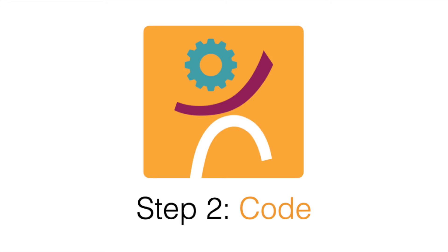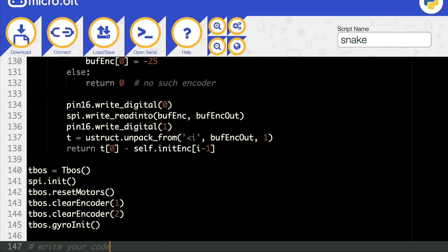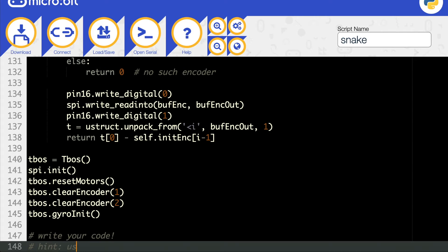Step 2: Code. Code a snake that moves right when button A is pressed and down when button B is pressed. The snake should be 4 pixels long and be able to wrap around the screen's edges.